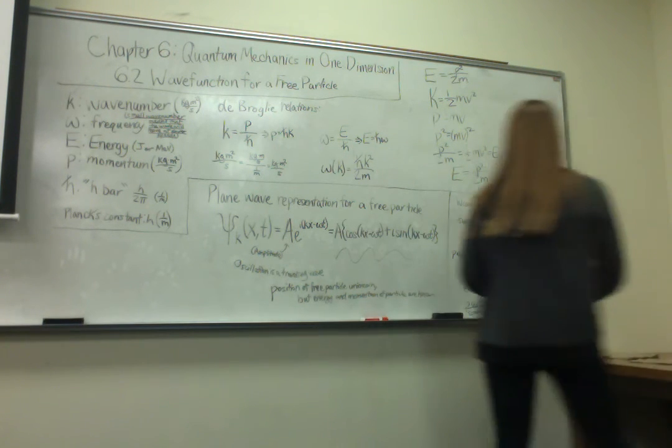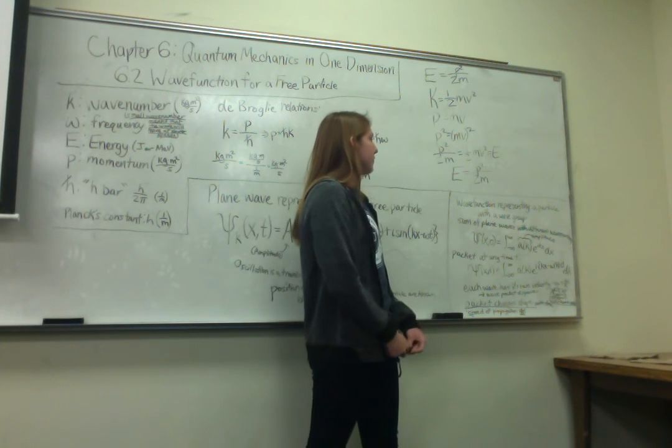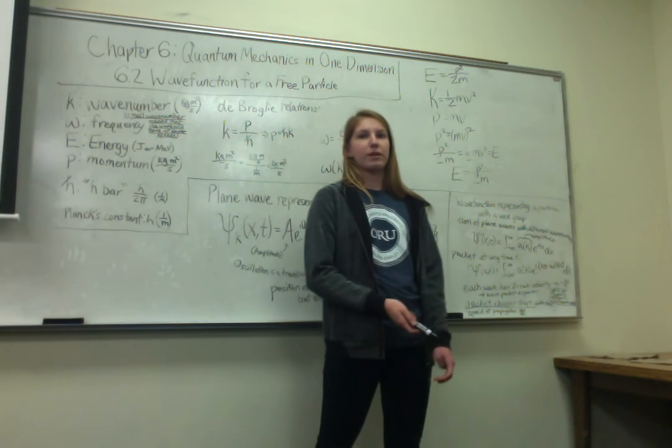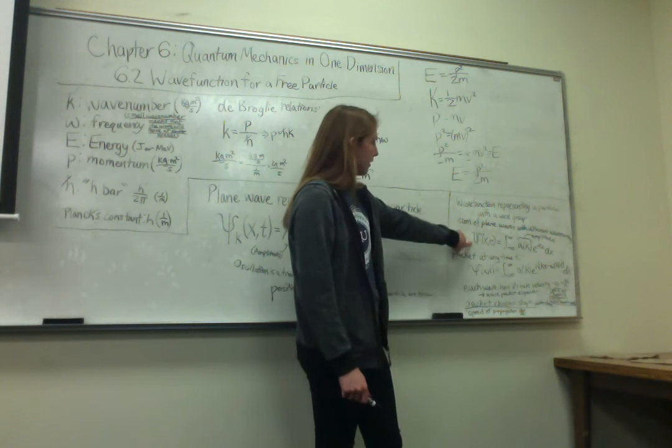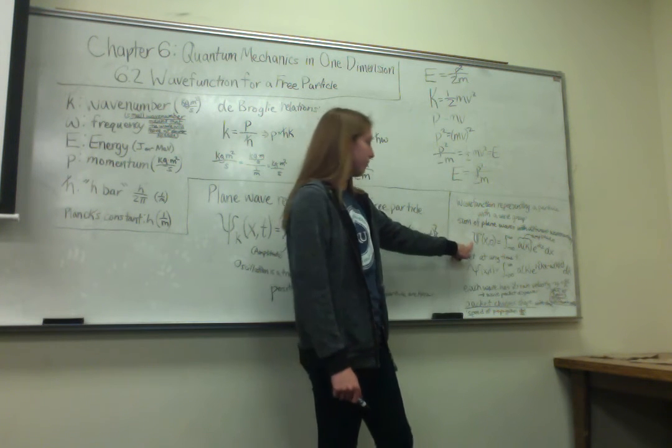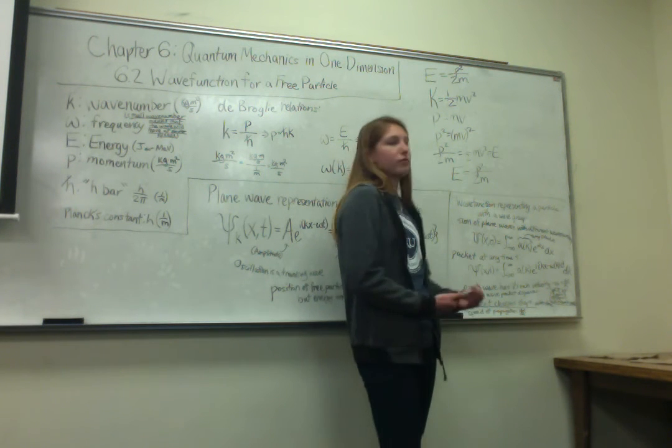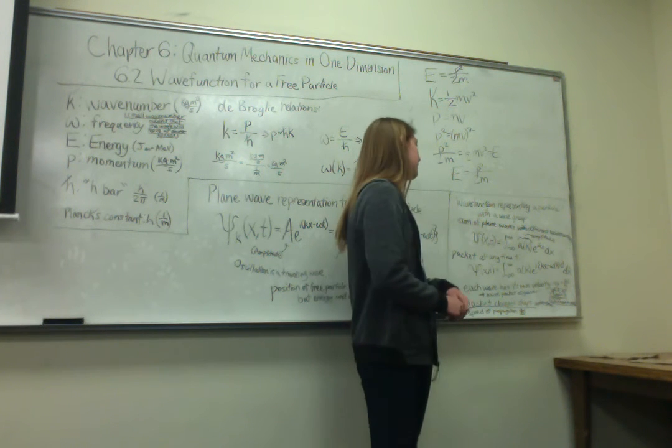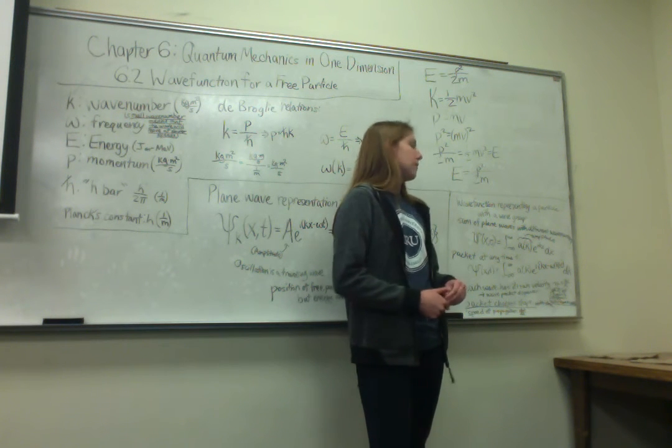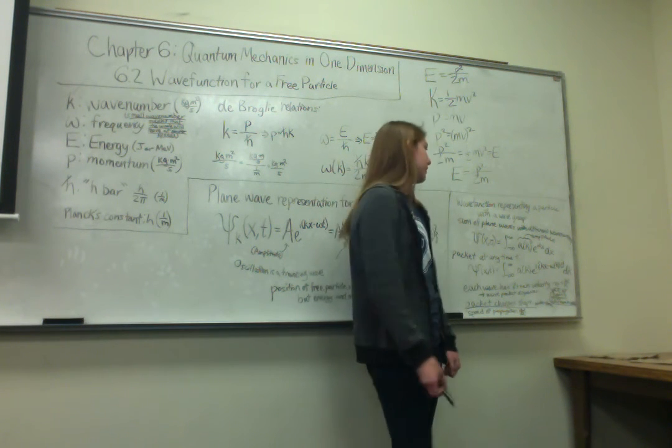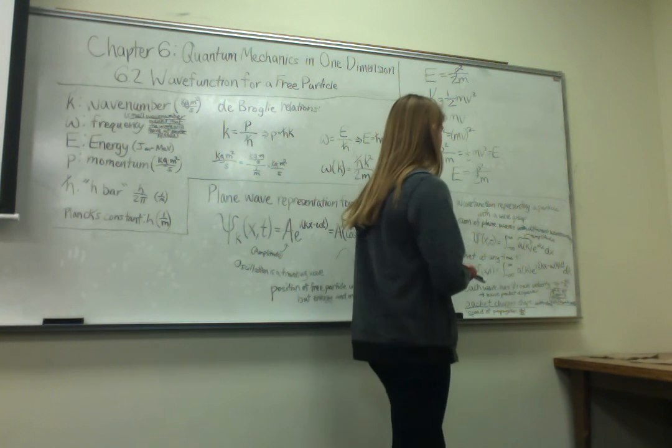And then, there also can be a wave group. So there's a different equation for the wave function of a particle traveling with a wave group. Here's the equation for when the time equals zero. It's the integral from negative infinity to infinity of A of k times e to the ikx, integrated with respect to k. A of k is the same as the amplitude of the function.